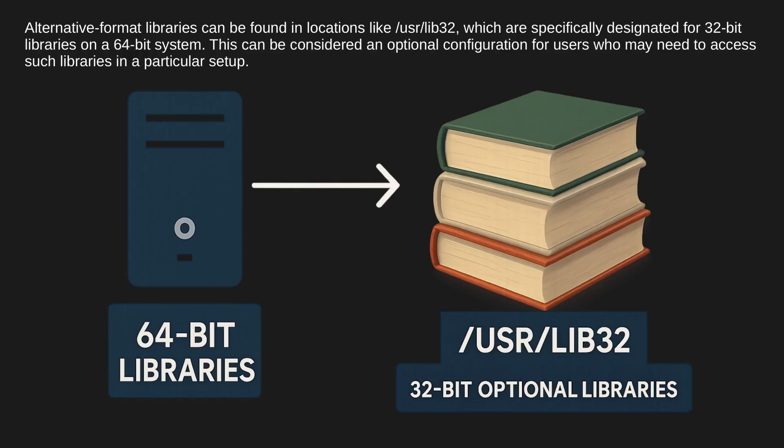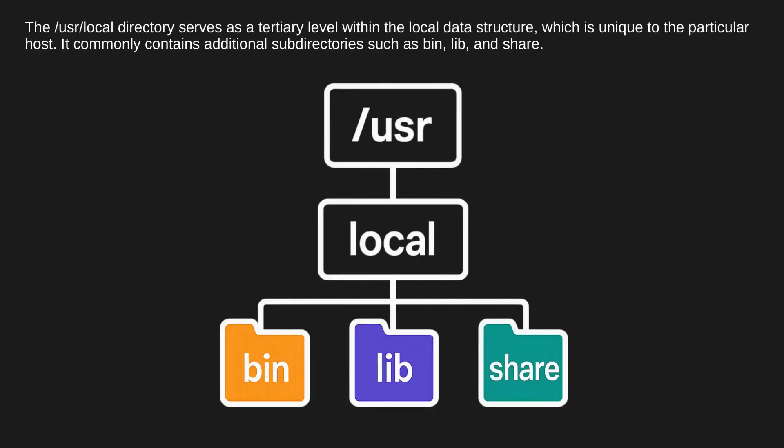Alternative format libraries can be found in locations like /usr/lib32, which are specifically designated for 32-bit libraries on a 64-bit system. This can be considered an optional configuration for users who may need to access such libraries in a particular setup. The /usr/local directory serves as a tertiary level within the local data structure, which is unique to the particular host. It commonly contains additional subdirectories such as bin, lib, and share.